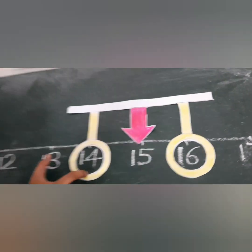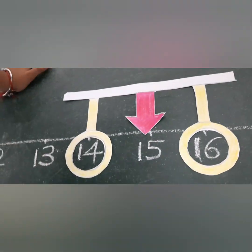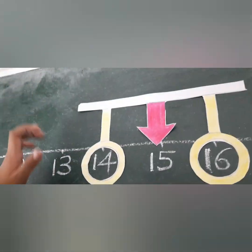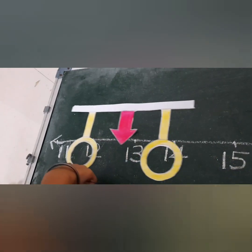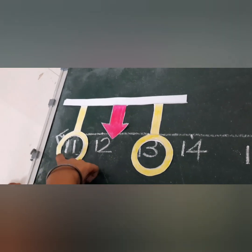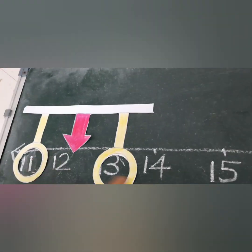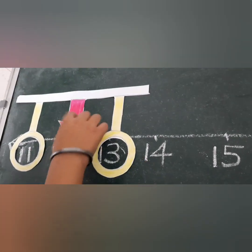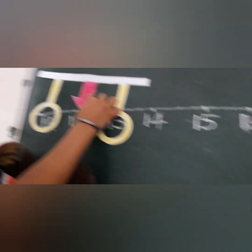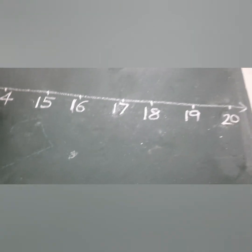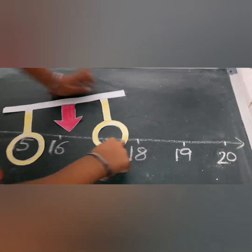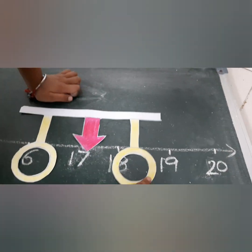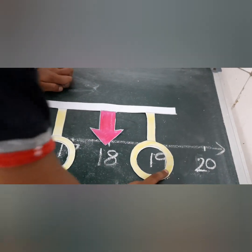What comes between 11 and 13? 12 — very good. What comes between 17 and 19? 18 — very good.